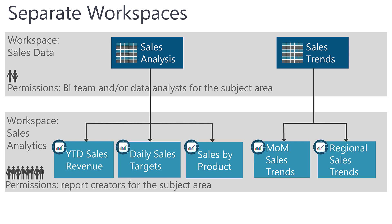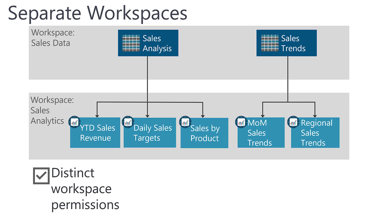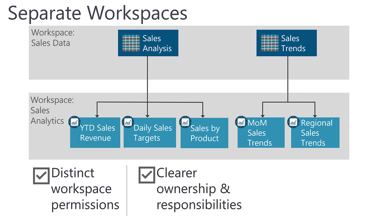The biggest advantage to separate workspaces is permissions management. The data workspace has very few people who may edit that content, whereas the reporting workspace allows many more users to publish their own reports. Having distinct workspace permissions lets us protect the datasets from inadvertent changes, especially when they are certified or have a lot of downstream report dependencies. It also reduces ambiguity when data is managed by one team and reports are owned and managed by another team, such as when a centralized IT or BI team produces datasets and a decentralized analyst produces reports.